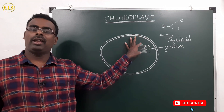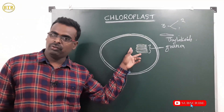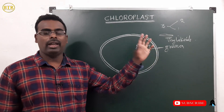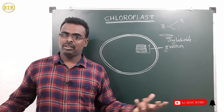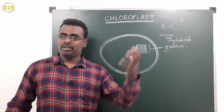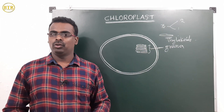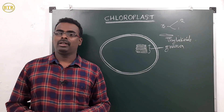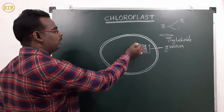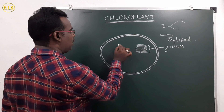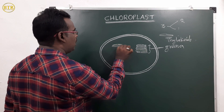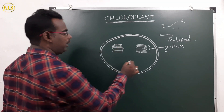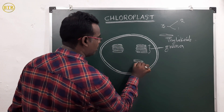A stack of thylakoids, or group of thylakoids, is called grana. What is the function of grana? Grana is the site of trapping solar energy. Solar energy is trapped in the grana region.